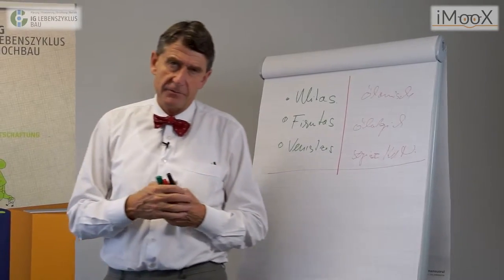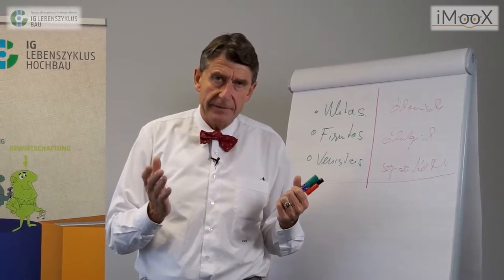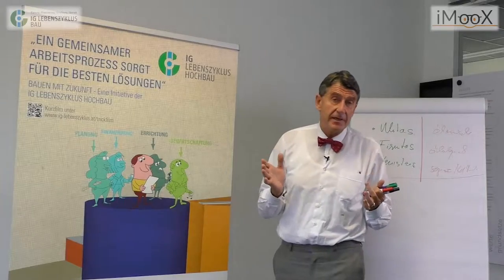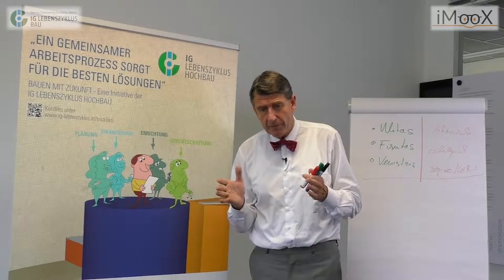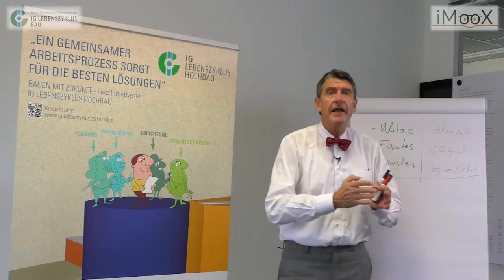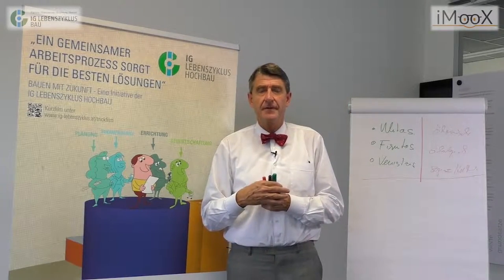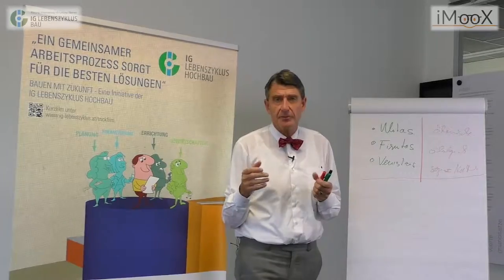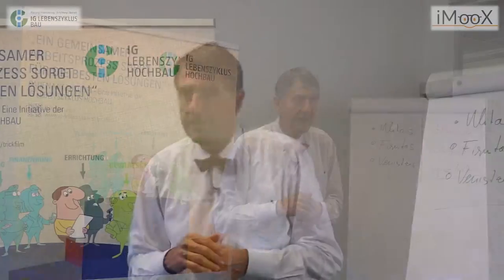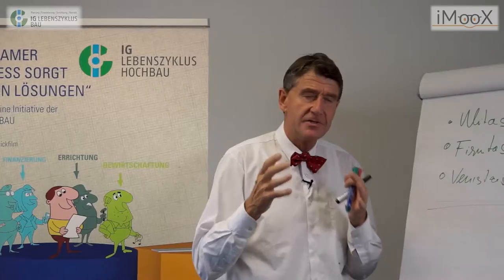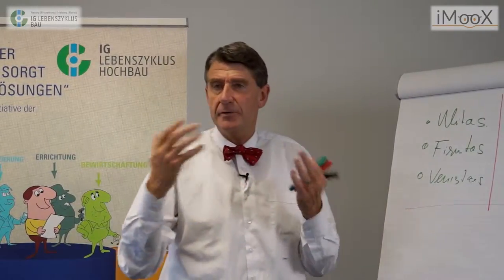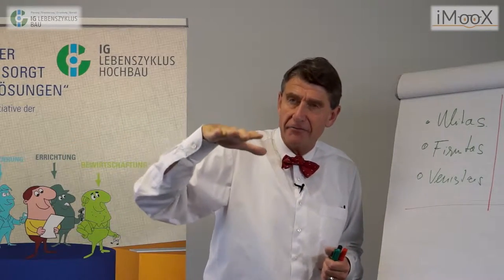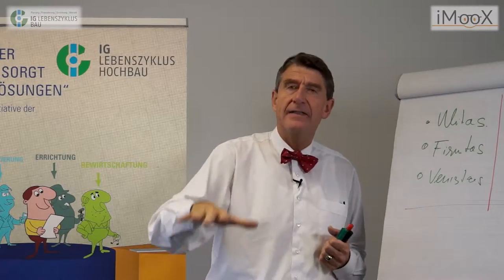Wir haben viele Beispiele in der Industrie, dass das vor 30, 40 Jahren genauso war. Aber die Automobilindustrie hat in den 60er und 70er Jahren bis zu 65 Monate gebraucht, bis aus der Idee eines Autos ein Auto entstanden ist, das auf die Straße kam. Heute dauert dieser Prozess zwischen 14 und 16 Monaten, und er ist um ein Vielfaches produktiver – weil in Projekthäusern alle notwendigen Kompetenzen auf gleicher Augenhöhe simultan an einem Tisch arbeiten.